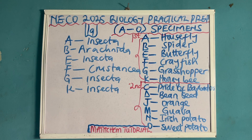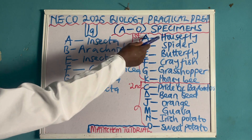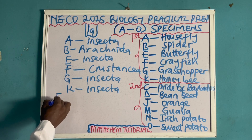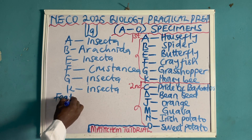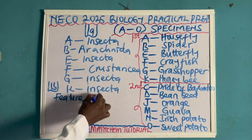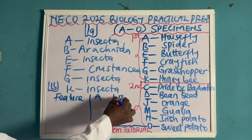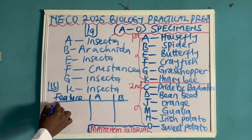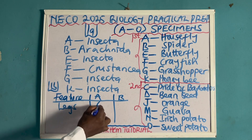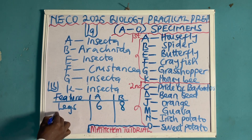Another thing they will ask is that you should state two observable differences between specimen A and B. That means, what observable difference can you observe between specimen A, that is housefly, and a spider? Let me say this is 1B. The features we can observe — for A and for B — comparing their legs: specimen A, that is the housefly, has 6 legs, and the spider has 8 legs.